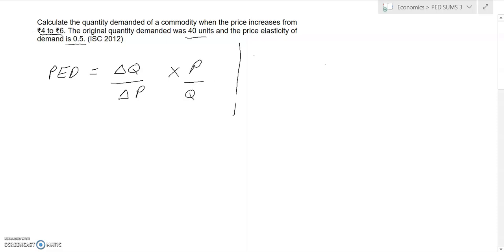In the question given to us, we know the old and new prices. If we take old price as P0 and new price as P1, we have both P0 and P1. We also have the PED, which corresponds to 0.5.